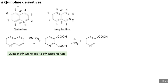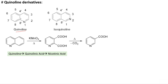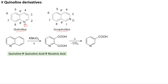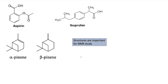Caffeine is a very well-known natural product and you should know its molecular structure. Quinoline looks like a fused bicyclic ring system; the numbering on the ring starts from 1 through 8. Isoquinoline is also called 2-quinoline. Quinoline can be converted into quinolinic acid by reaction with KMnO₄ with heating, and that can further be converted into nicotinic acid by removal of carbon dioxide. Some molecules important for NMR studies include alpha-pinene, beta-pinene, aspirin, and ibuprofen.